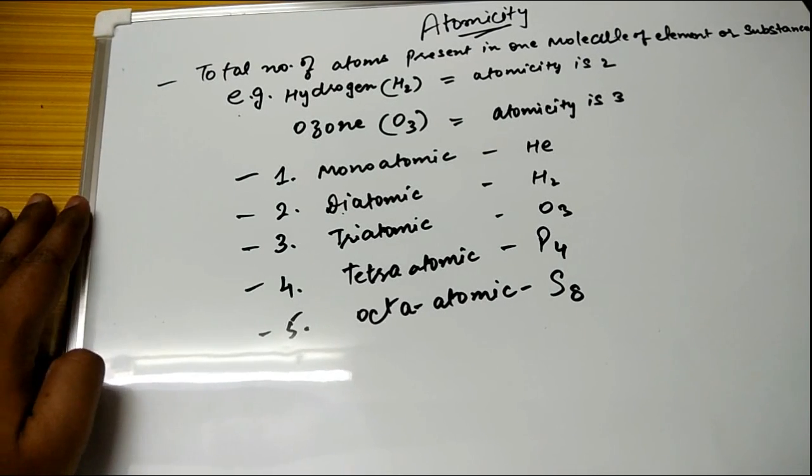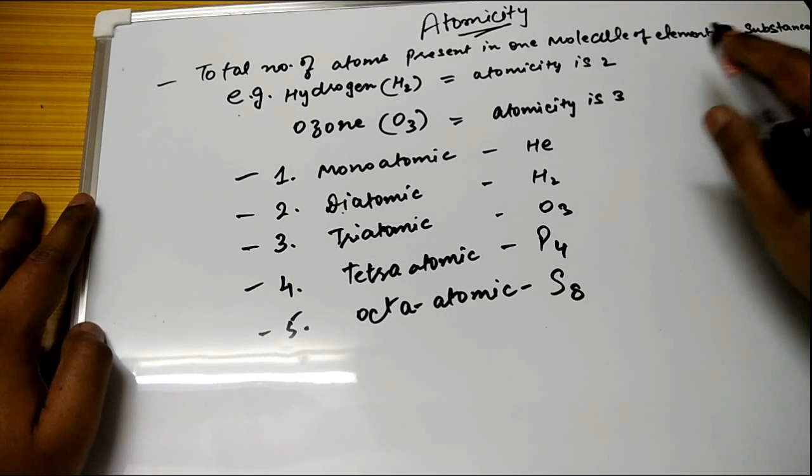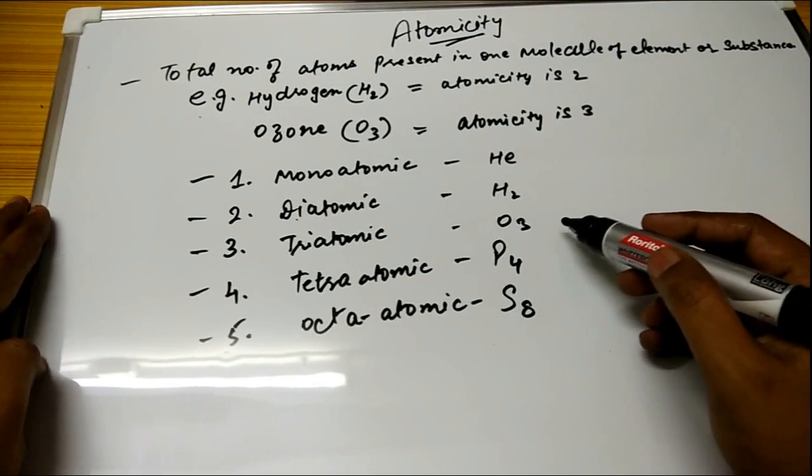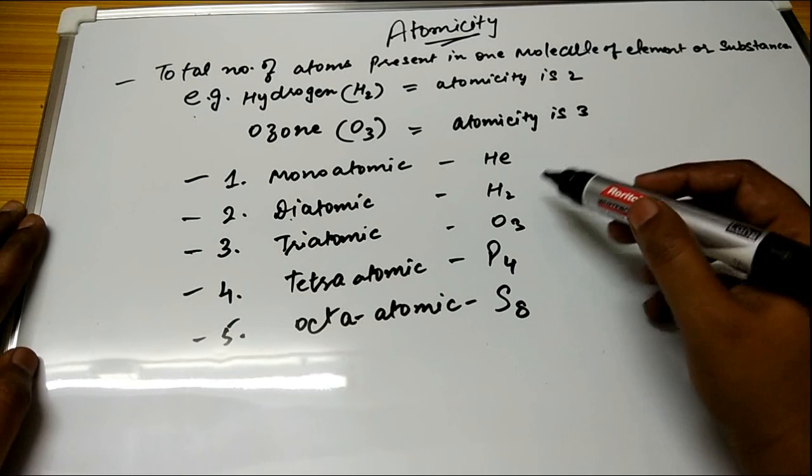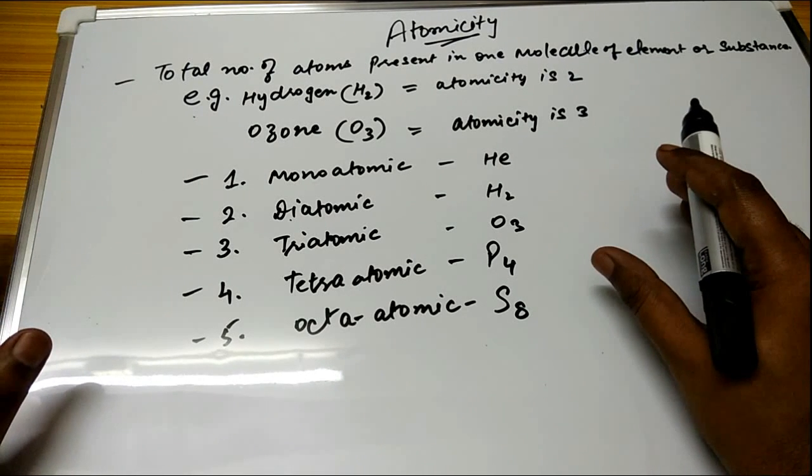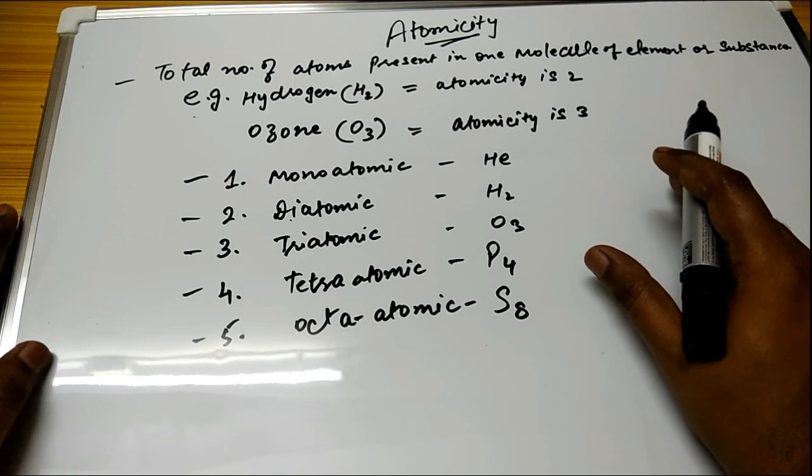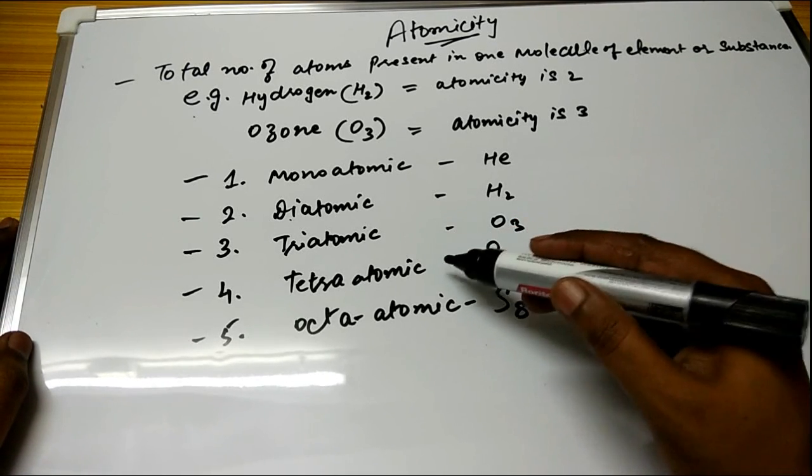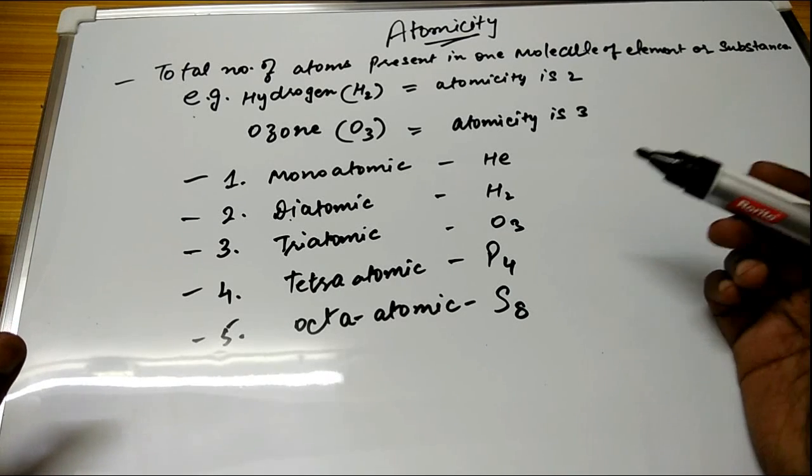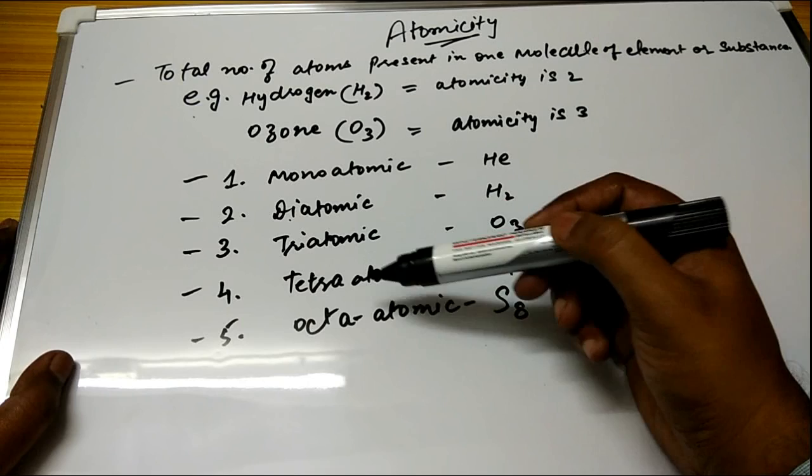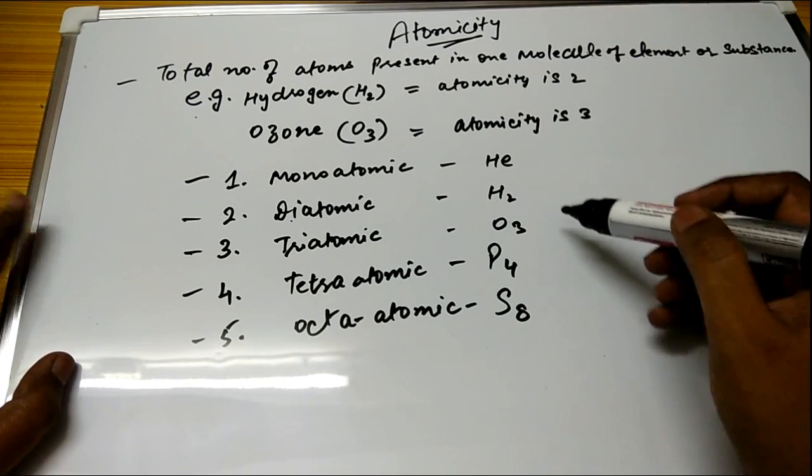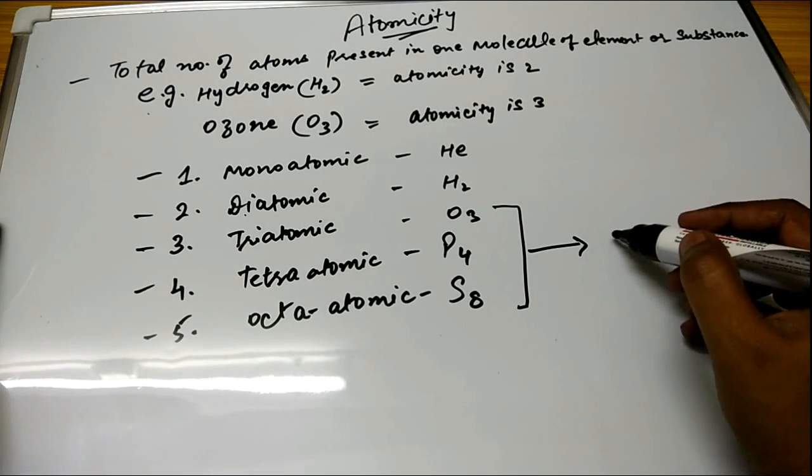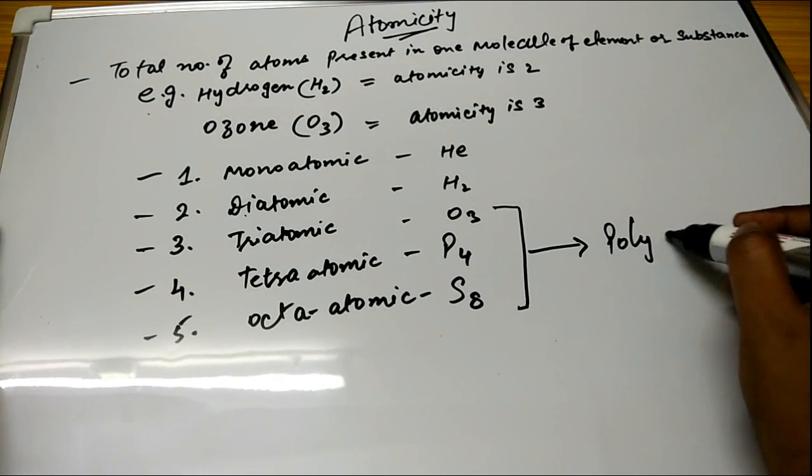Now one more thing you need to understand: monoatomic and diatomic are the names given to these elements. From triatomic, tetra-atomic, octa-atomic, you don't need to remember the terminology like tri, tetra, octa, hexa, penta like that. From here you can give all of them a similar name which is known as polyatomic.